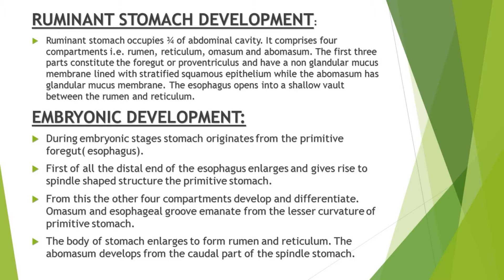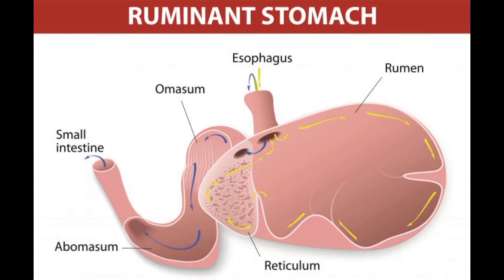Rumen, reticulum, and omasum constitute the foregut or proventriculus and have a non-glandular mucous membrane which is lined with stratified squamous epithelium. Abomasum is lined only with glandular mucous membrane. The esophagus opens between the rumen and reticulum in the form of a shallow arc or shallow vault.